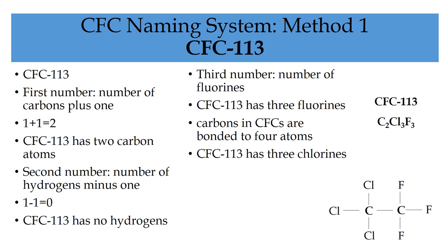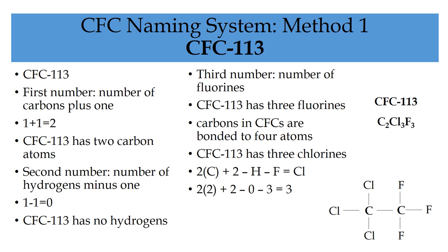There is a calculation you can use to work this out each time: the number of carbons times two, plus two, minus the number of hydrogens, minus the number of fluorines. For CFC-113, that is two times two carbons plus two, which gives six available carbon bonds, then minus zero hydrogens and minus three fluorines, which equals three chlorines. This calculation also works for CFC-11 and CFC-12; it just isn't really necessary in those cases.